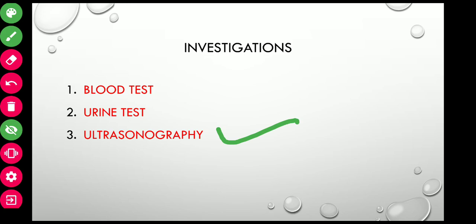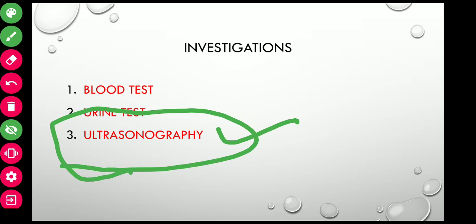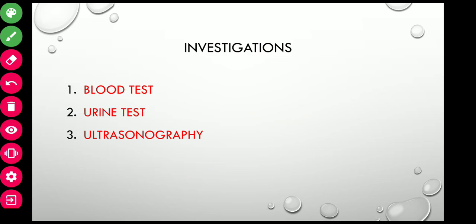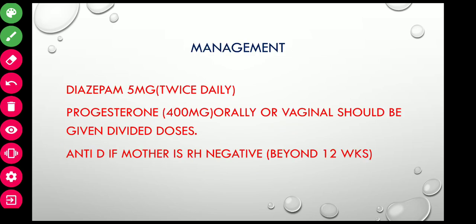Ultrasonography findings may include a well-formed gestation ring with central echoes from the embryo indicating a healthy fetus. Observation of fetal cardiac motion can also be seen. If ultrasonography is available, pelvic examination need not be performed.